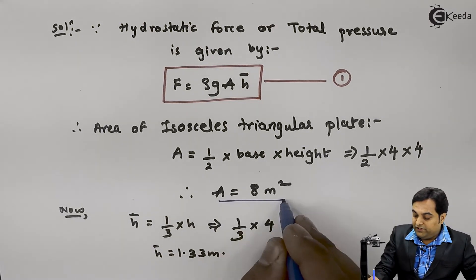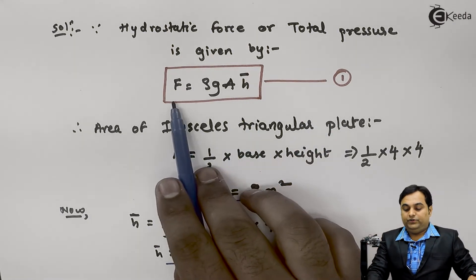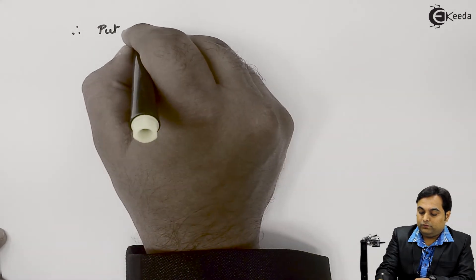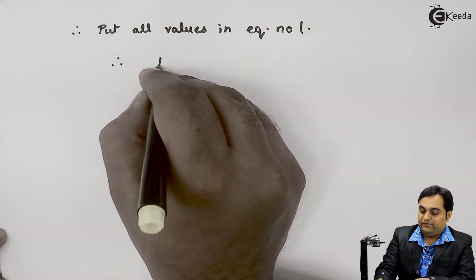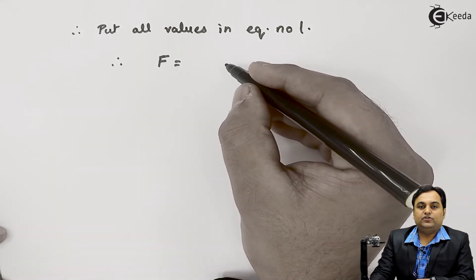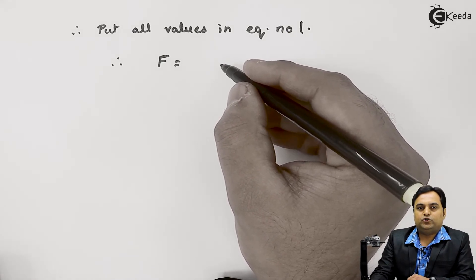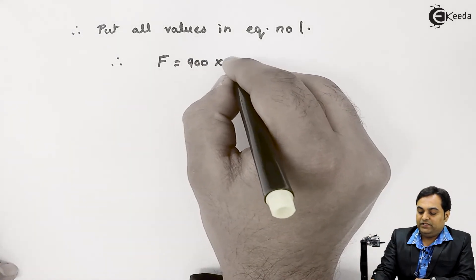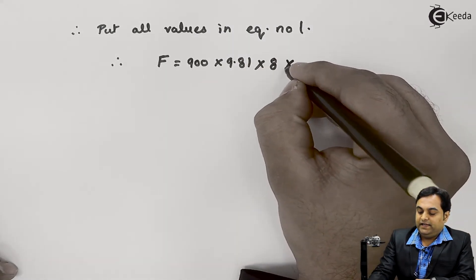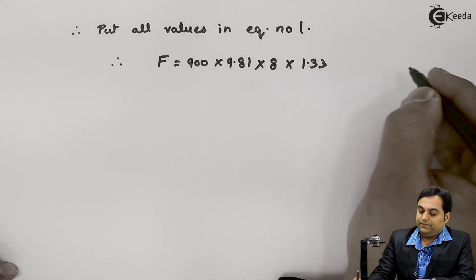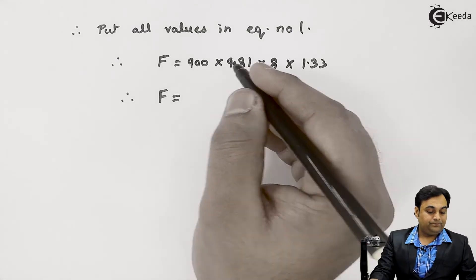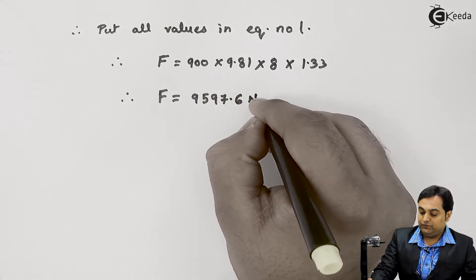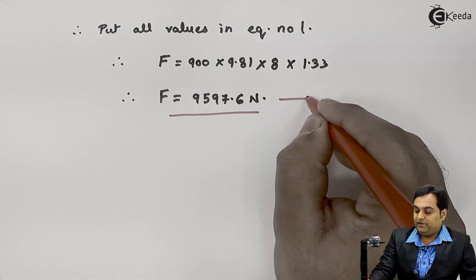Now that we have the area and h-bar, we can substitute all values into equation number one to get the hydrostatic force. The total pressure F equals rho times g times A times h-bar, which is 900 times 9.81 times 8 times 1.33. Calculating this gives a hydrostatic force of 9597.6 Newtons. This is our first answer.